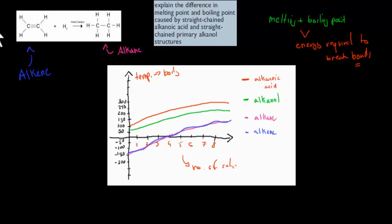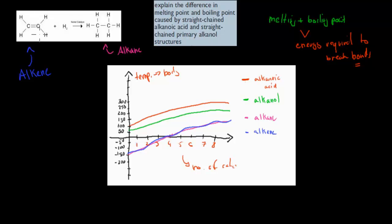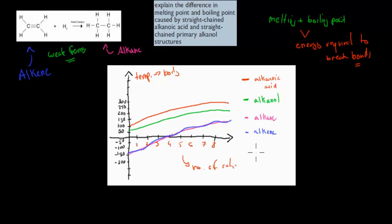We can see that the lowest boiling points are from alkanes and alkenes. That makes sense because alkanes and alkenes only have hydrogen and carbon atoms, which means we only have dispersion forces. Dispersion forces happen between pretty much any molecule and they're very weak. So these have very weak forces, which means their boiling point will be quite low because we can break those forces quite easily.